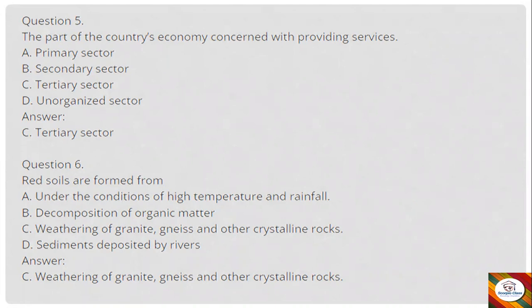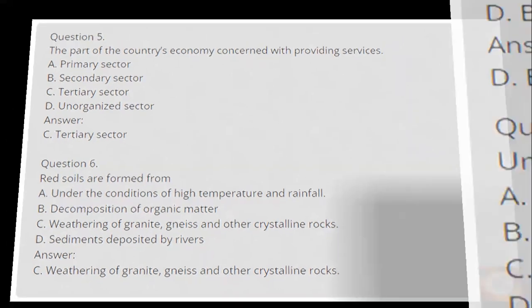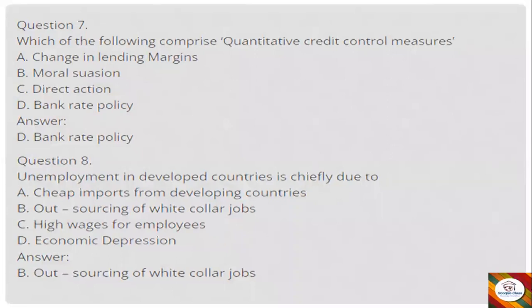Question 5: The part of the country's economy concerned with providing services — A) primary sector, B) secondary sector, C) tertiary sector, D) unorganized sector. Answer: C, tertiary sector. Question 6: Red soils are formed from — A) high temperature and rainfall, B) decomposition of organic matter, C) weathering of granite and other crystalline rocks, D) sediments deposited by rivers. Answer: C, weathering of granite and other crystalline rocks.